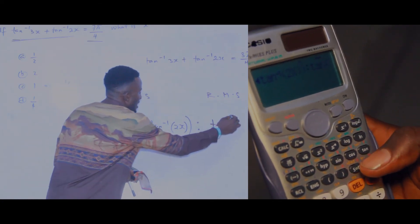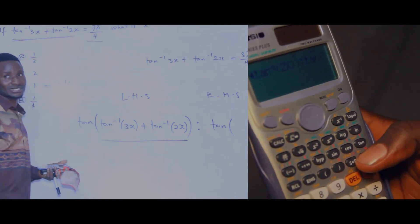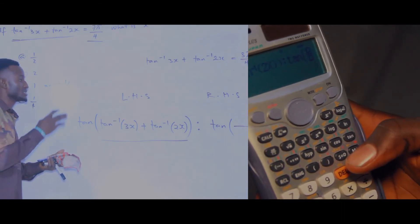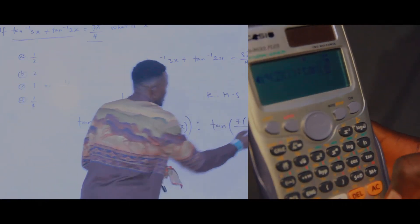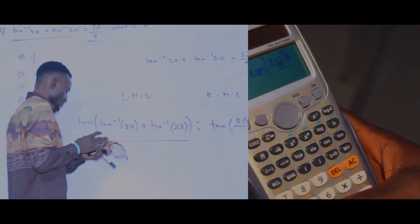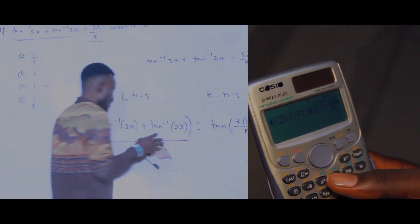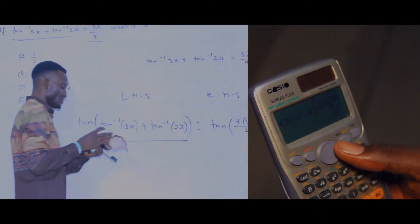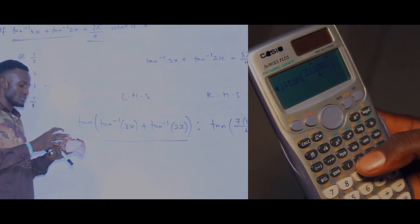Don't forget we are introducing tan to both sides, so press tan for the right side as well. Press tan and open the bracket. Now your right side is seven pi over four, so press the fraction button. At the numerator press 7, then open the bracket — remember pi is 180 — press 180, then close the bracket. Come to your denominator and press 4, then close the general bracket. Now press equals.